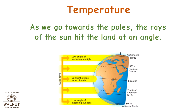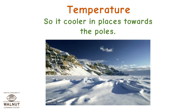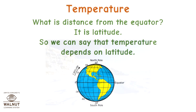As we go towards the poles, the rays of the sun hit the land at an angle, so it's cooler in places towards the poles. The distance from the equator is called latitude. We can say that temperature depends on latitude.